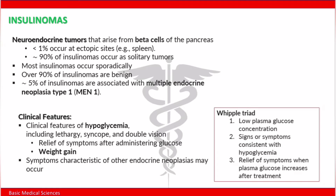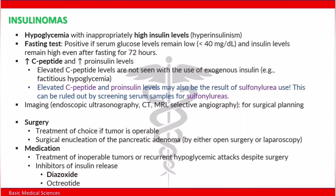There can also be symptoms characteristic of other endocrine neoplasia. You need to remember Whipple's triad, which includes: low plasma glucose concentration, signs or symptoms consistent with hypoglycemia, and relief of symptoms when plasma glucose increases after treatment.